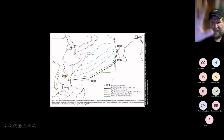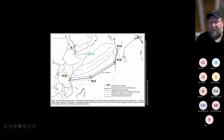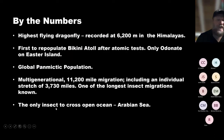The range of the wandering glider is fairly cosmopolitan — found on just about every continent except Antarctica. One of their migrations goes from the edge of Africa to India — flying over the open ocean. It's the only insect known to cross the Arabian Sea. It's the highest-flying dragonfly, recorded at 6,200 meters in the Himalayas — roughly 18,600 feet high. That must be extremely cold, so how they maintain flight at that altitude is remarkable.